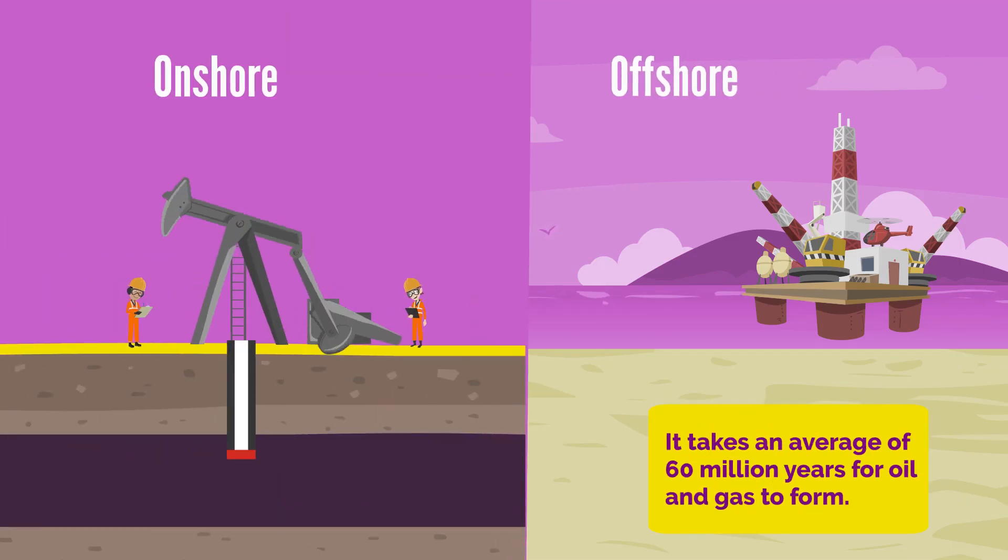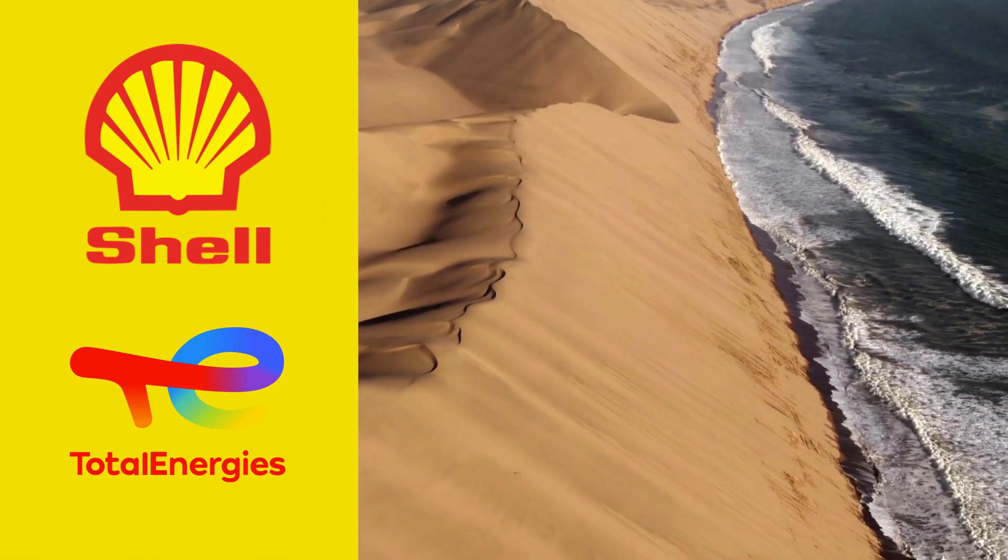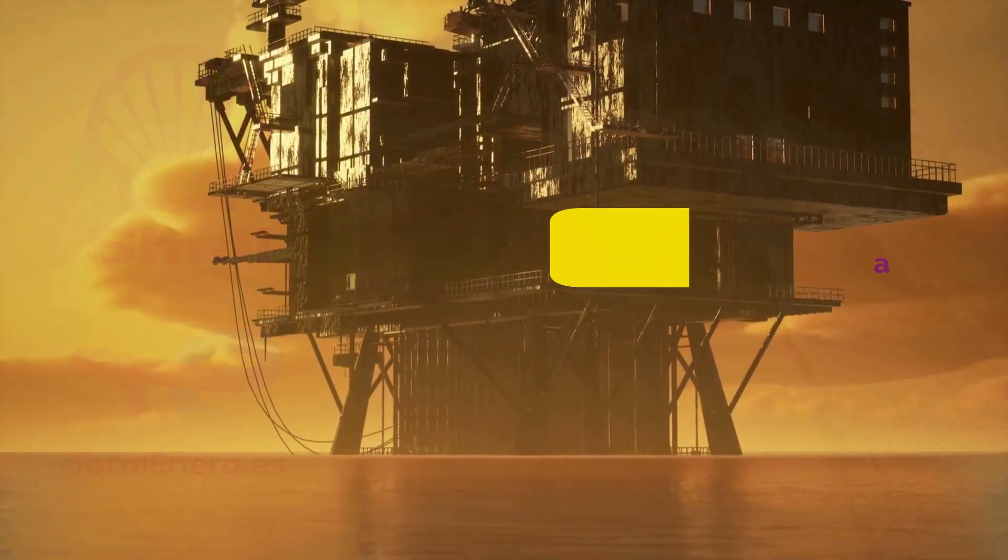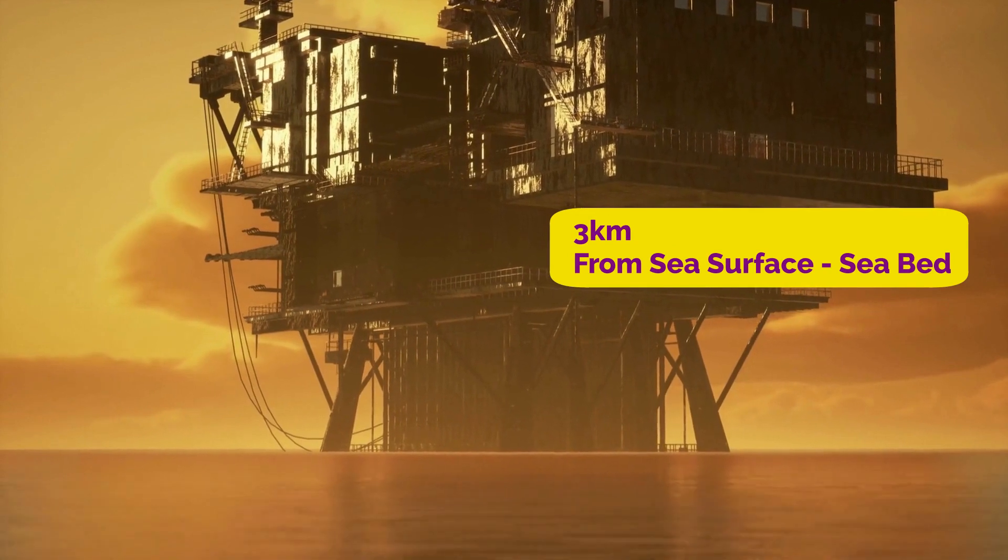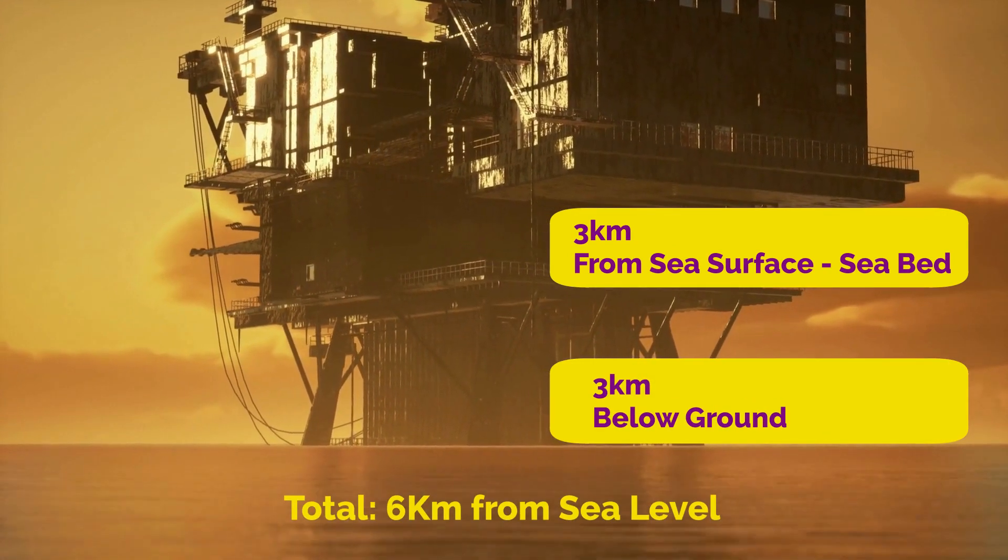It takes an average of 60 million years for oil and gas to form. In Namibia, both Shell and Total Energies have found light oil and some gas at a deep depth of 3 kilometers from the sea surface to the seabed and another 3 kilometers below the ground, a total of 6 kilometers from the sea level.